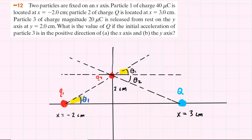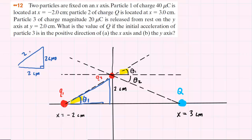To find theta 1, it will also be useful to find the hypotenuse of that right triangle. So if we look carefully at the diagram, we have a right triangle where this distance here is 2 centimeters and this distance here also is 2 centimeters. You could do the Pythagorean theorem, or you may know that when you have an isosceles right triangle, the hypotenuse is basically one of the legs multiplied by root 2. So this hypotenuse becomes 2 root 2 centimeters.